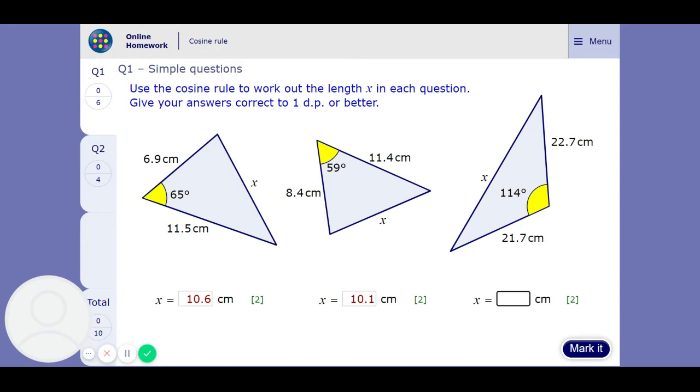And the last one. 22.7 squared plus 21.7 squared take away 2 times 21.7 times 22.7 times cos 114. Gets us 37.2.